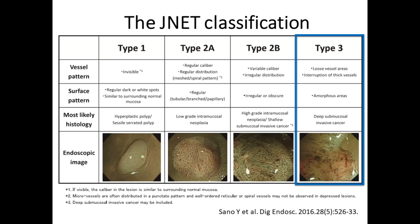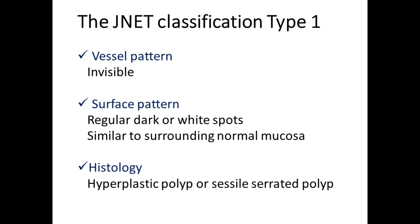Now, we will present typical cases of each J-Net type. J-Net Type 1 polyps do not have specific patterns of vessels and surface structures, so the vessel pattern is invisible and the surface pattern is similar to normal mucosa. Regular dark and white spots are often observable on the surface. Polyps with such findings are predicted to be hyperplastic or sessile serrated polyps.